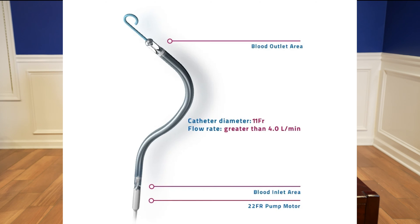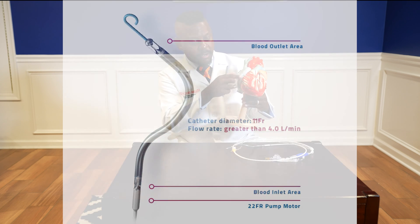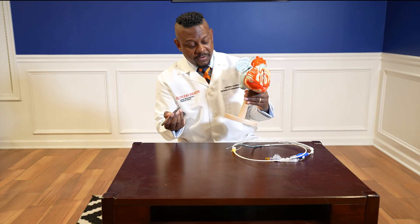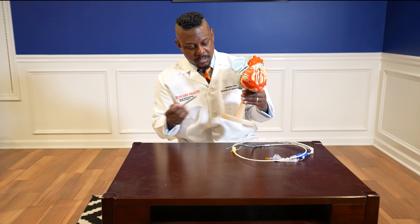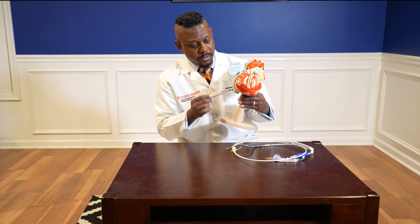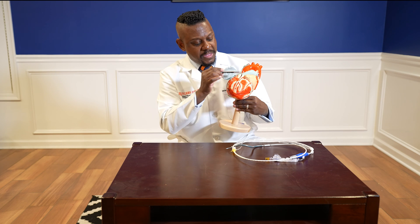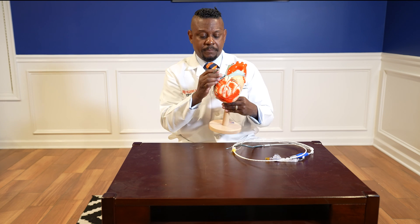With our model of the heart here, the inferior vena cava is right here, so the input area goes there, and the output area goes into the pulmonary artery. Blood is pulled out of the inferior vena cava and pushed into the pulmonary artery, allowing the right ventricle and right heart to rest.